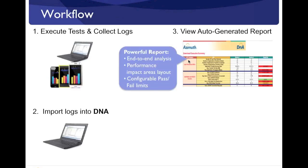The report that DNA generates compares the different devices or different networks across different layers — peeling the different layers of the onion. It highlights cells in red to tell the user there is something going on here, and makes it easier to dig in deeper by tying all related values together. This makes it very simple and fast for a user to run a test, import the logs, and quickly identify if there is a problem and focus on the right area.